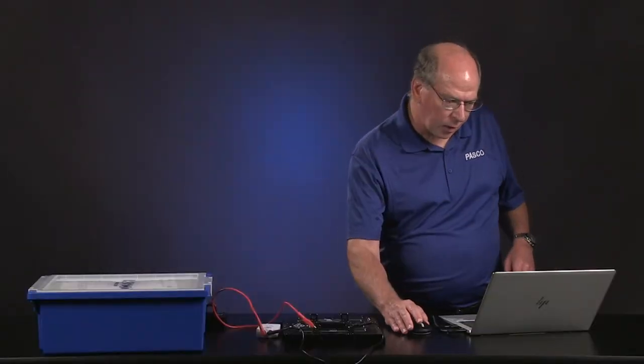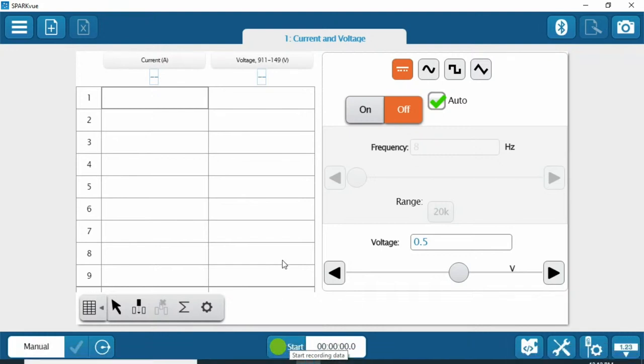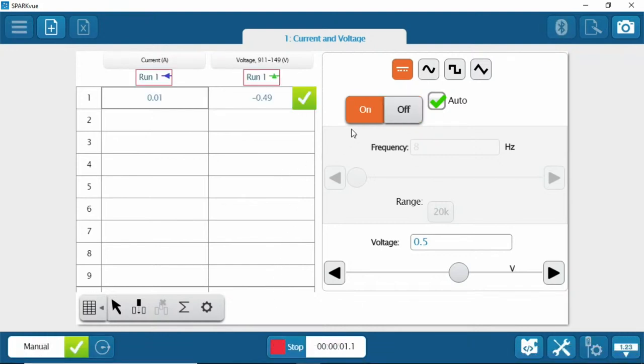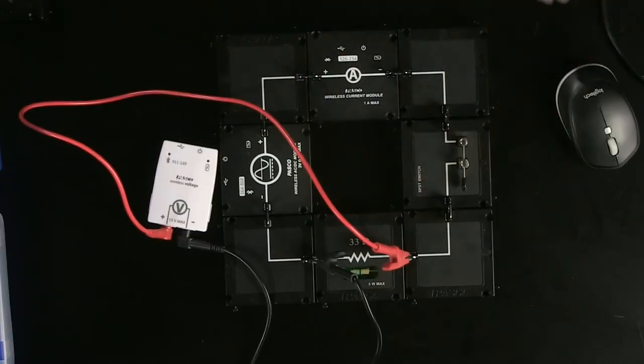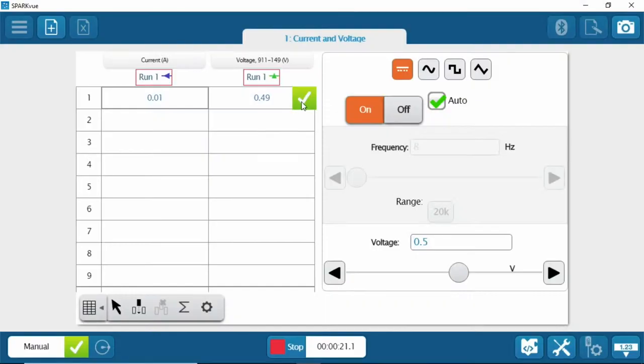So this is a little more basic than a Wheatstone bridge, but it's still important. So I'm going to hit start. And so what's happening now is I have the AC-DC control panel sending a half volt through the circuit. And I'm reading the current, 0.01. And then the voltage, I guess I flip those around, huh? 0.49. So I want to save those. So I click the green check mark. And now I have that data in my data table. Let's change this to one volt. And so not surprisingly, the current went up and the voltage across the resistor went up. Click that. Now I've got that data point.